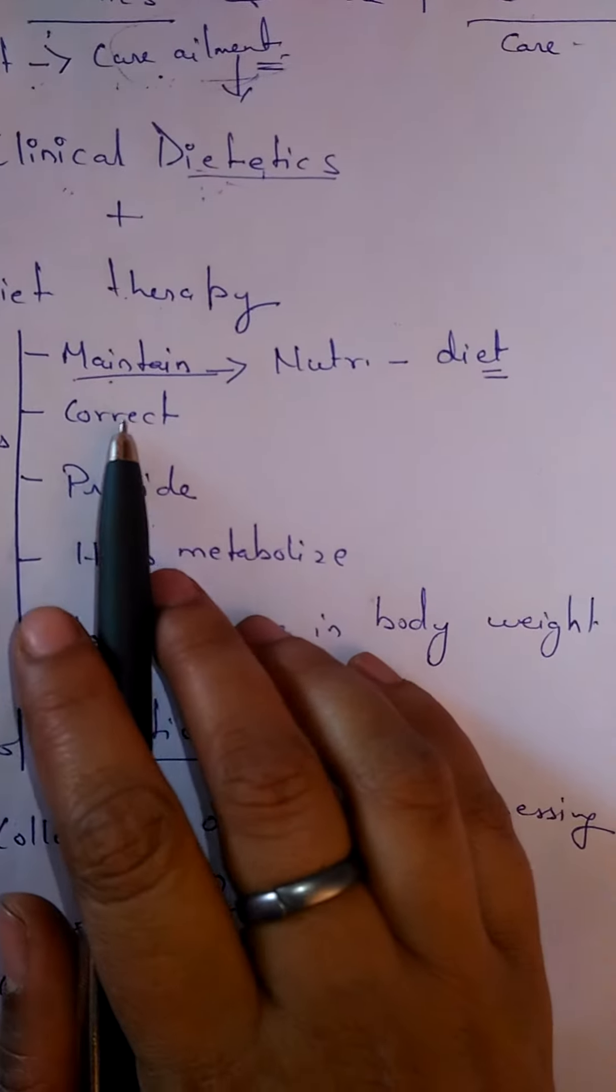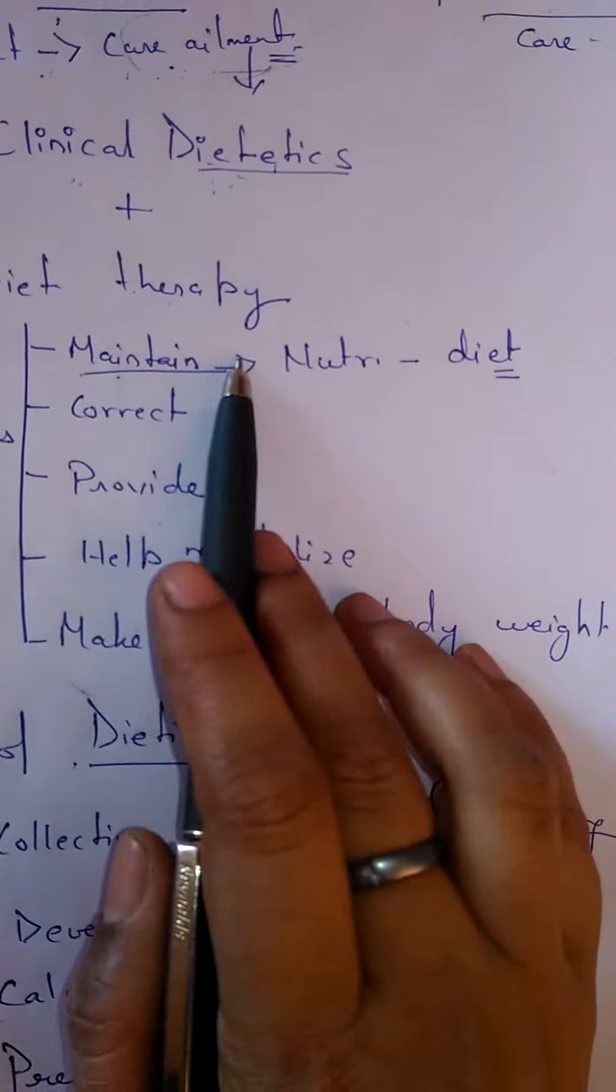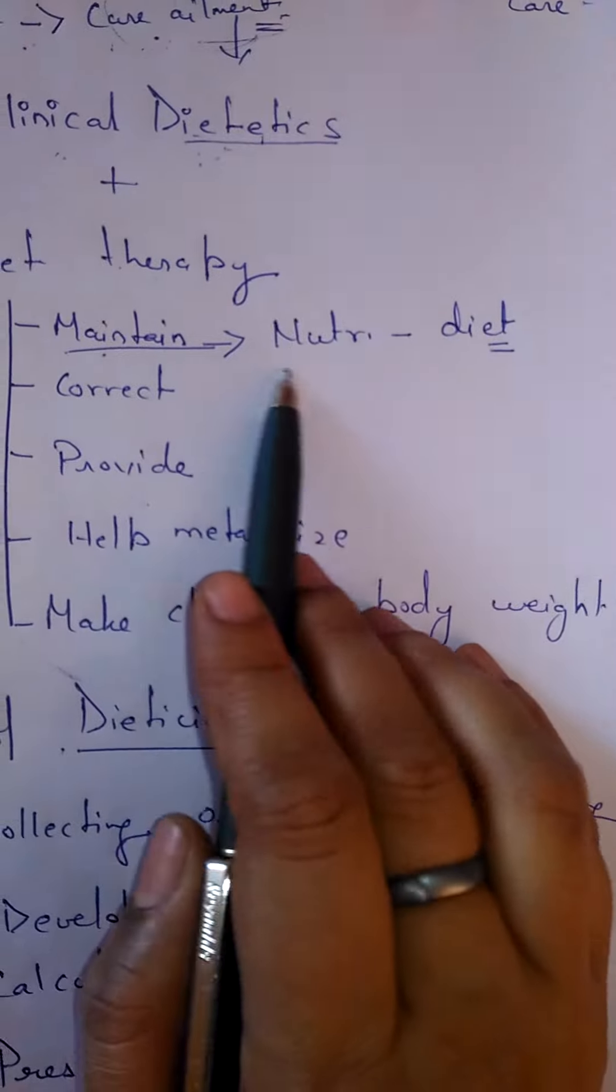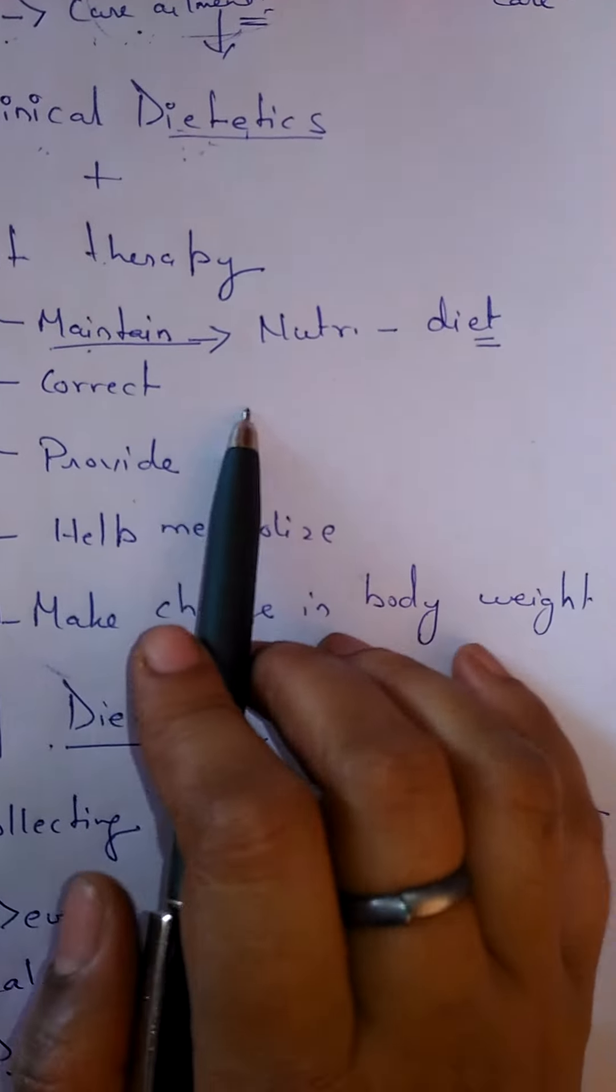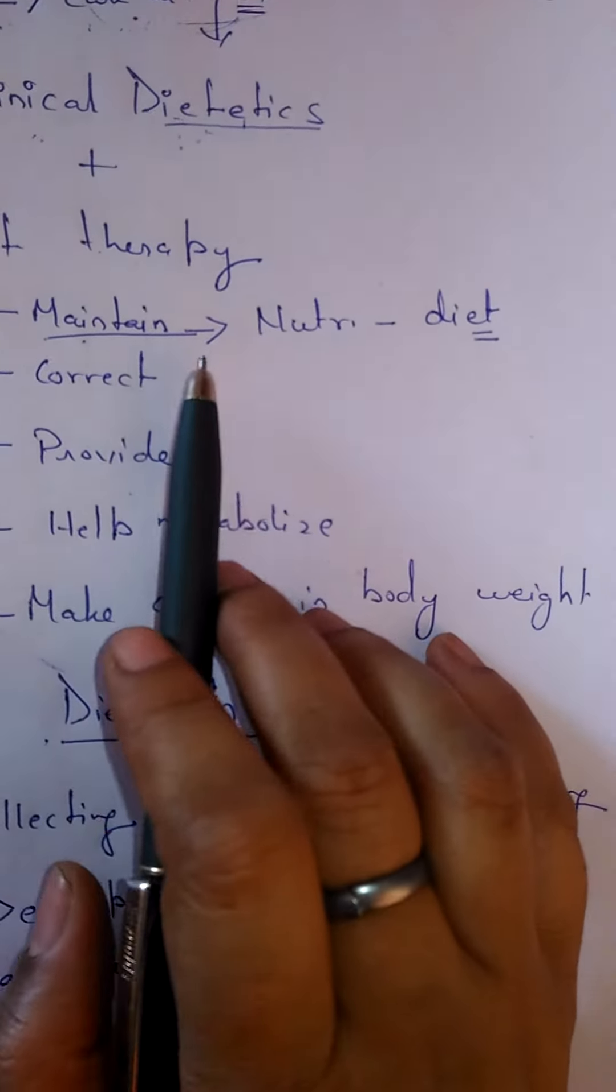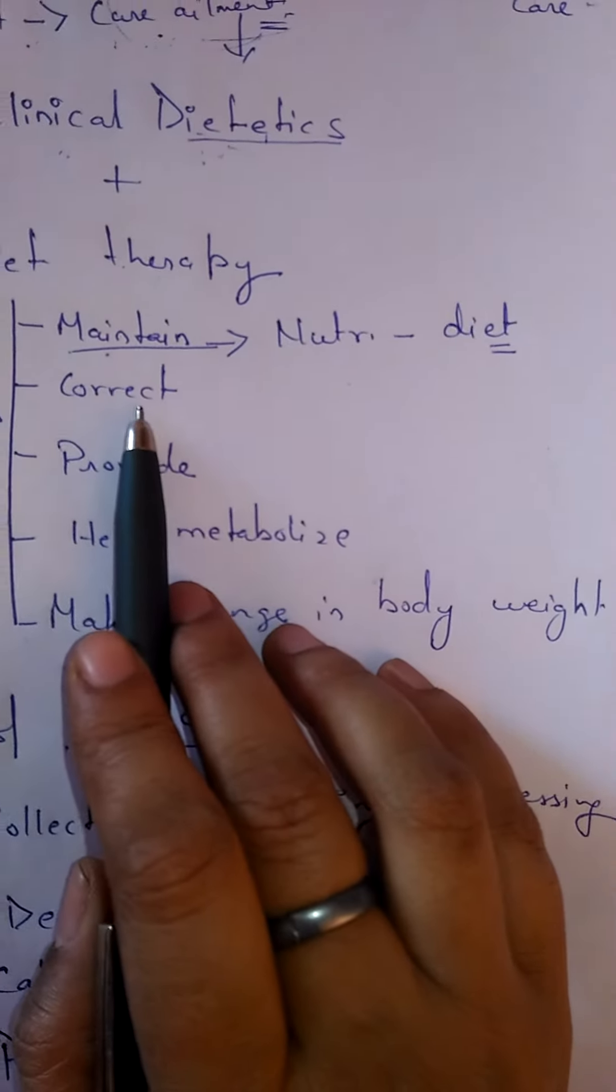Then the next thing given here is correct. We are maintaining it, then what we have to do? We have to maintain its correct ratio. It should be neither excess nor less. We have to maintain its correct status.